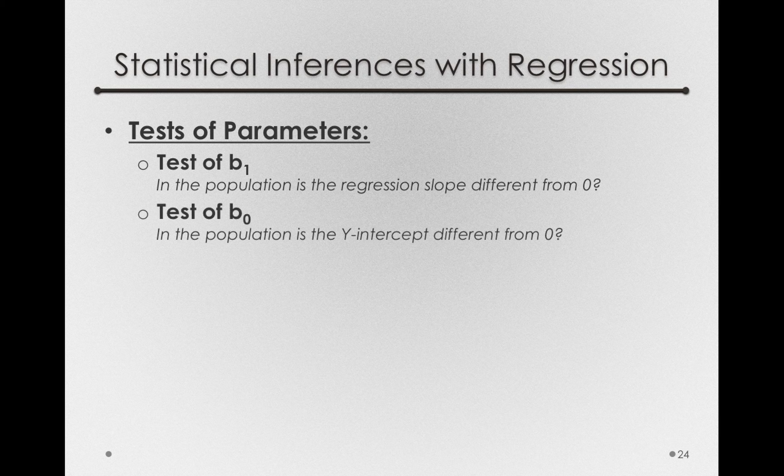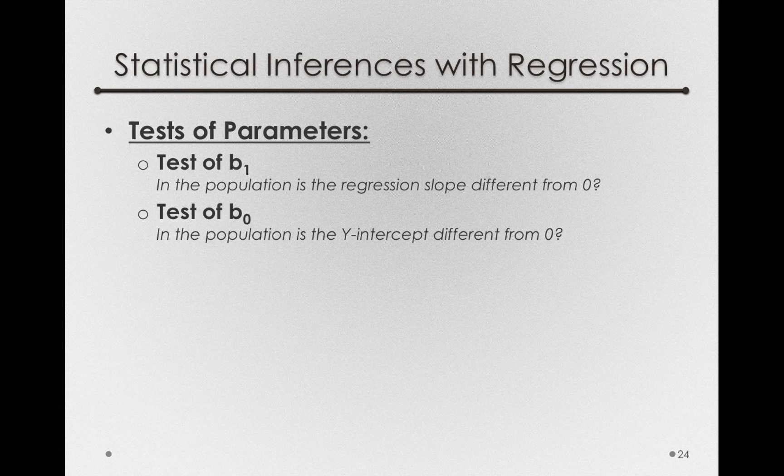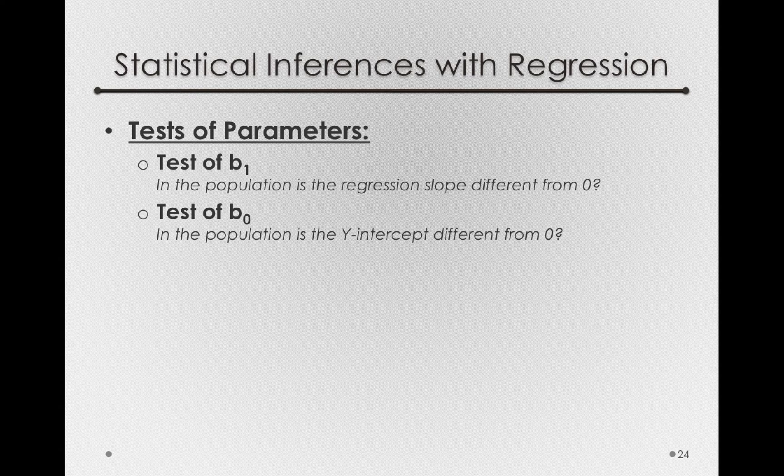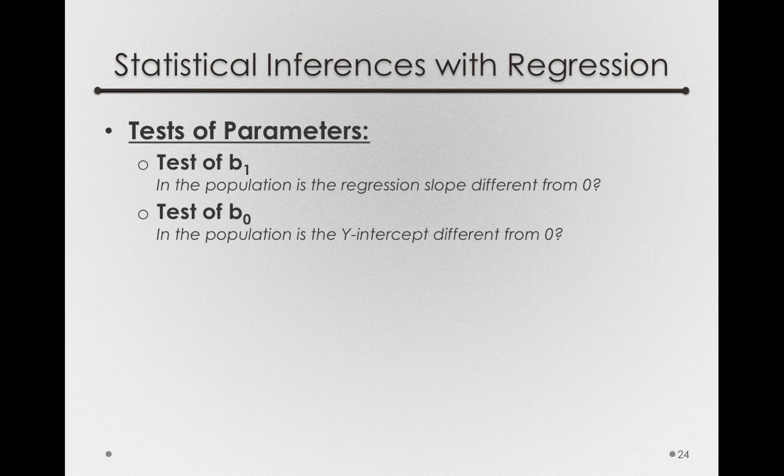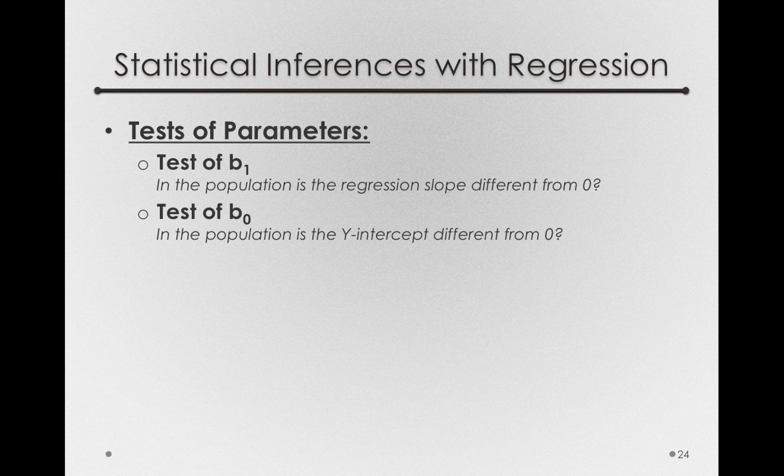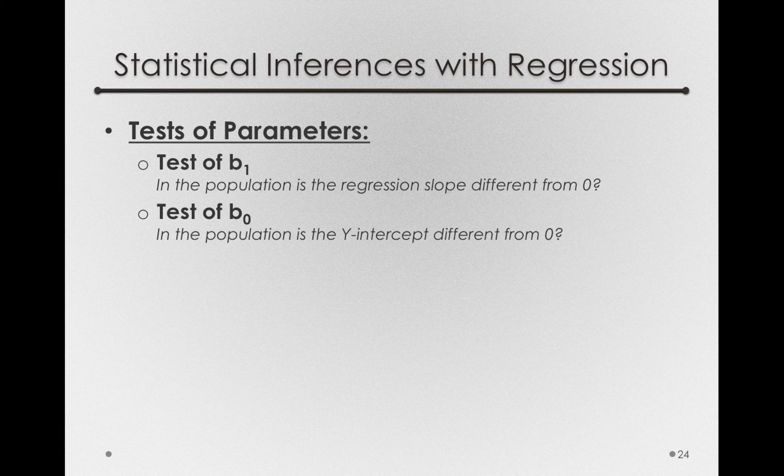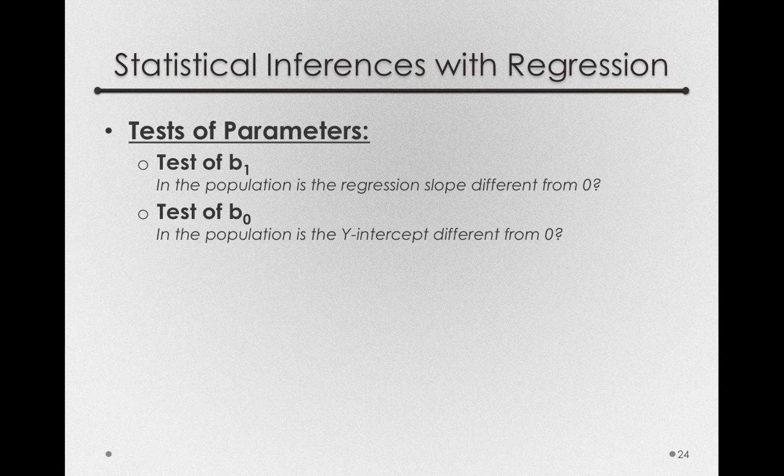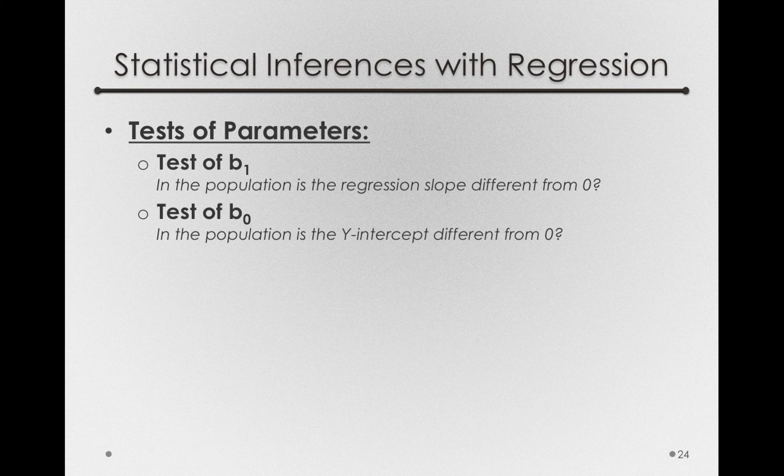Now we can also form a test of B0. And that's the question of, in the population, is the y-intercept different from zero? Now this test is usually of less interest than the test of the slope. The test of the slope is really the test of the effect of x on y. Whereas the test of B0 is just a test of whether when you have none of x, do you have anything different than zero of y.